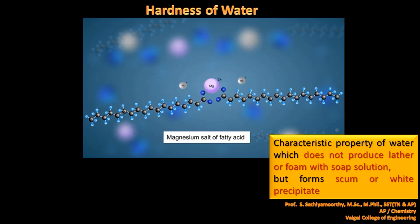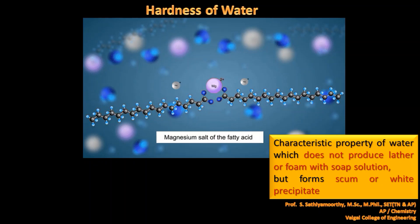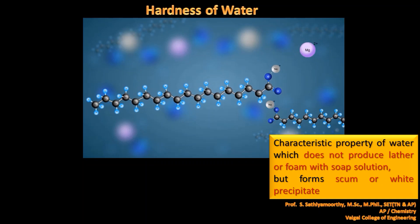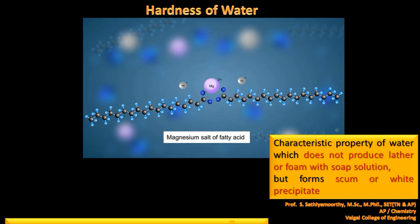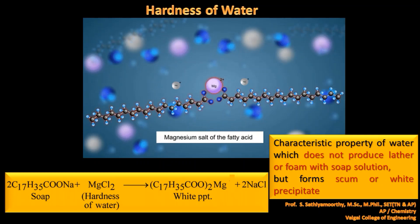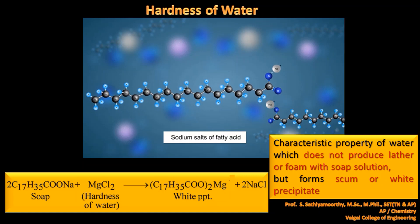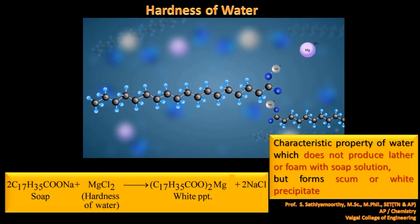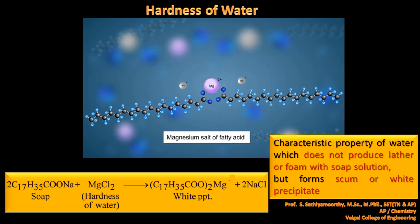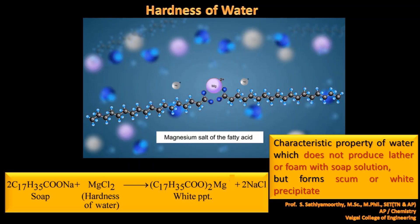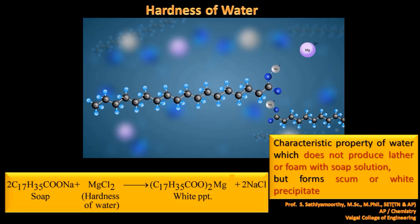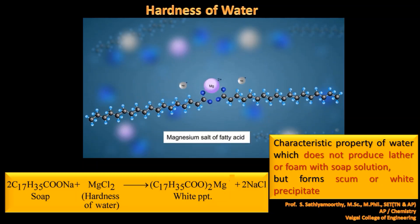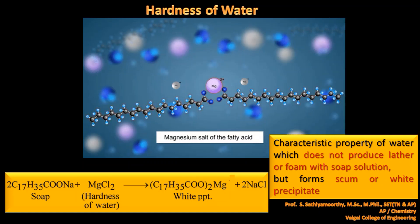But when soaps are added to hard water, the sodium is replaced by magnesium or calcium, forming magnesium or calcium salts of fatty acids. These calcium and magnesium salts trap the fatty acid — that is, the soap molecules — and do not produce any lather or foam. Instead, they form scum or white precipitate. The exact reaction: soap reacting with hardness-causing magnesium chloride produces white precipitate — called scum — instead of foam or lather.